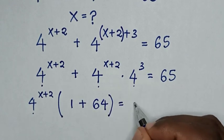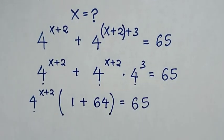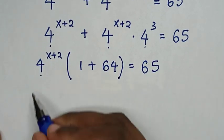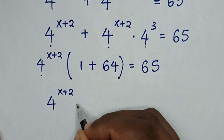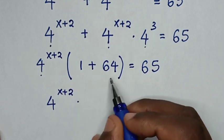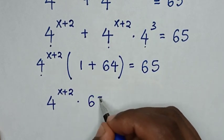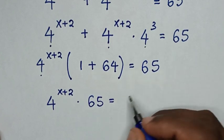Bracket is equal to 65. Then our equation will be 4 power of x plus 2, times 1 plus 64 is 65, is equal to 65.